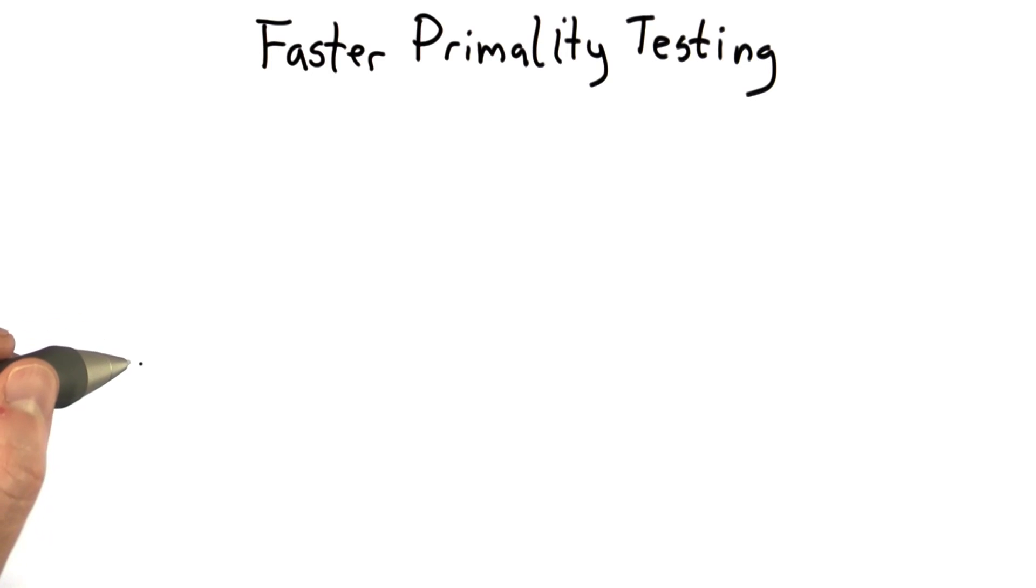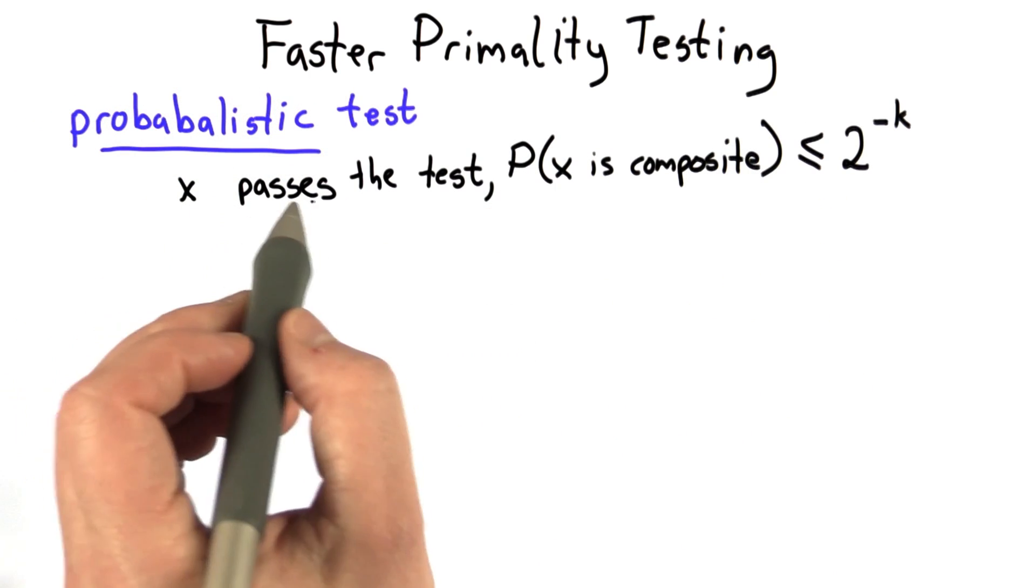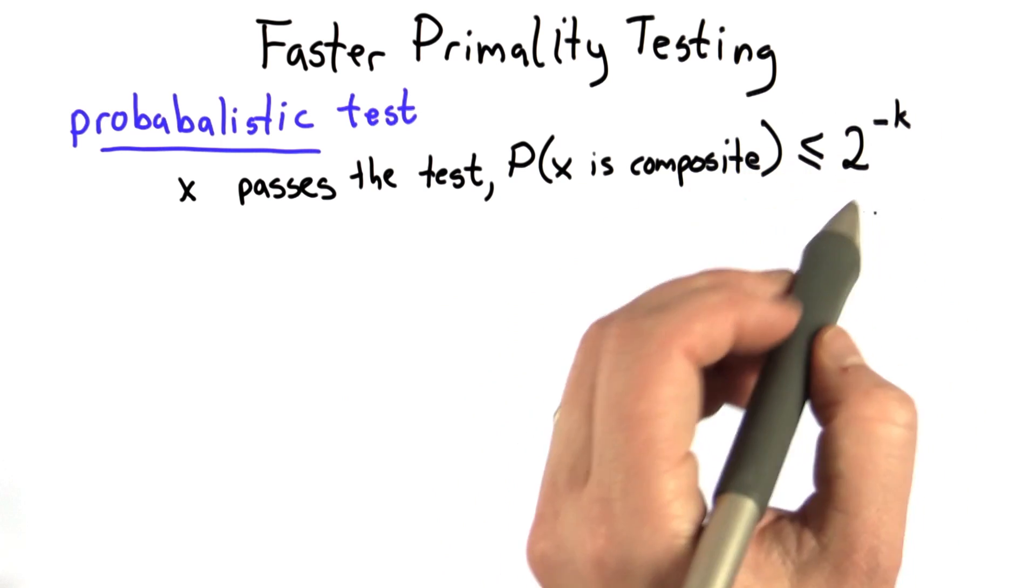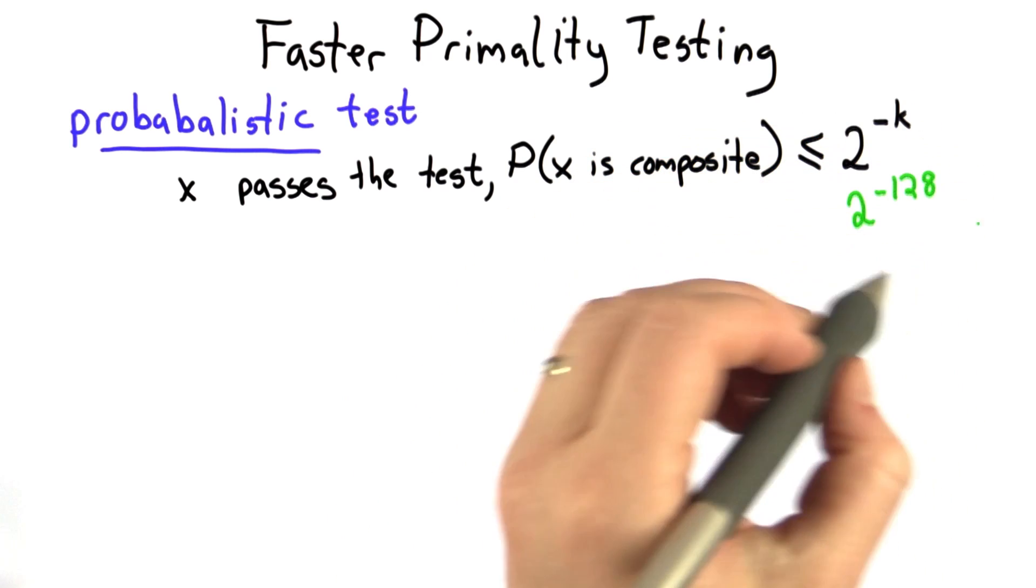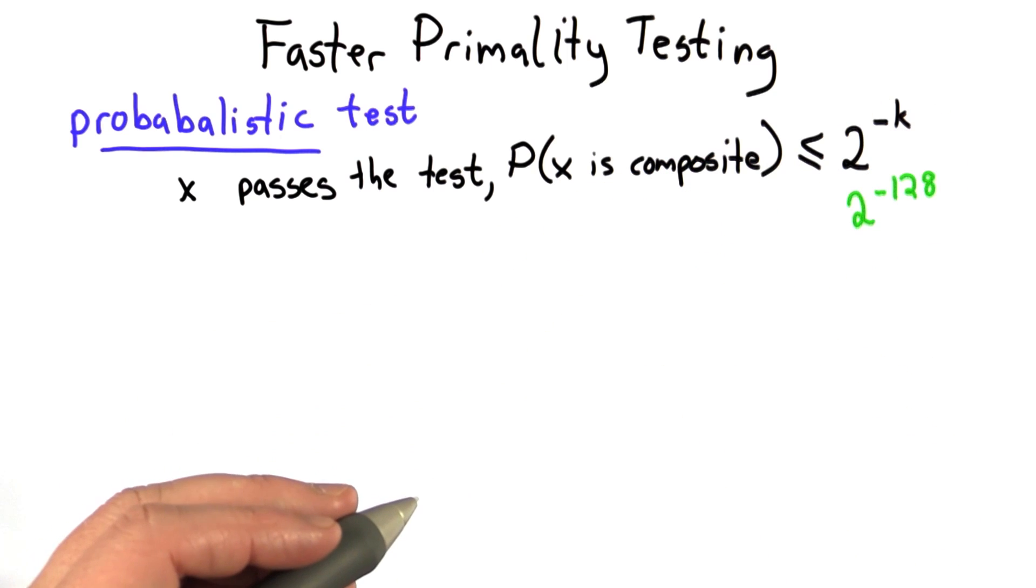So we need a faster test for primes. And what we're going to use is a probabilistic test. And that means if some number x passes the test, the probability that x is composite is less than some value. And we're going to use probabilities like 2 to the negative 128. This is certainly low enough for most uses in cryptography.